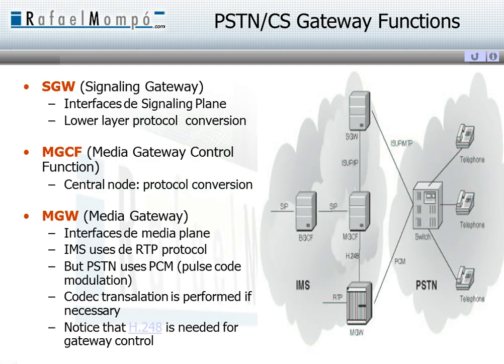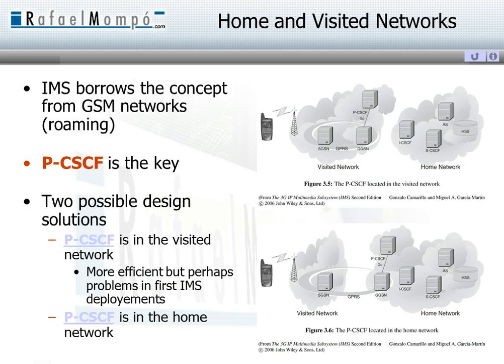As it happens in all components of an IMS architecture, this gateway to the public switched telephone network separates the signaling gateway from the media gateway, and in the media gateway the control function is also separated.